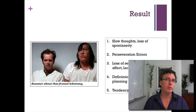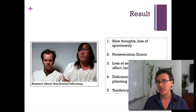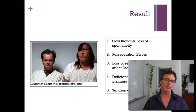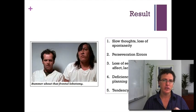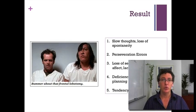One example is the Wisconsin card sorting task, where cards have three qualities: shapes — triangles, squares, or circles — depicted in either red, green, or blue, and either one, two, or three of these items on each card. So you could have, say, three blue triangles.